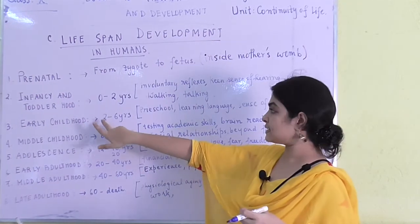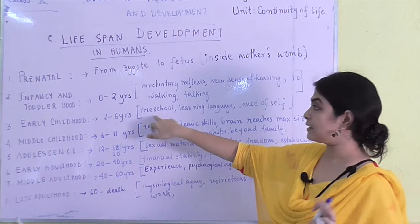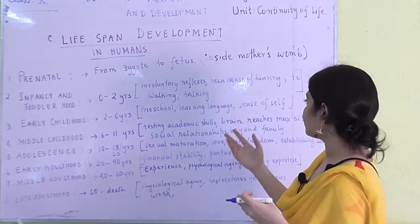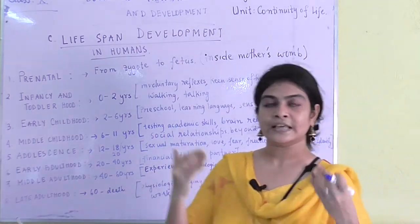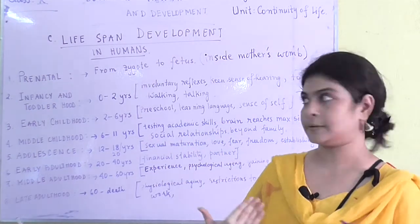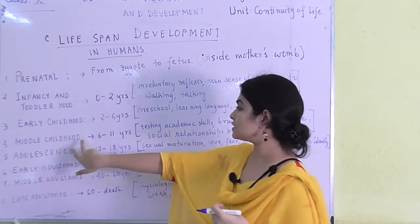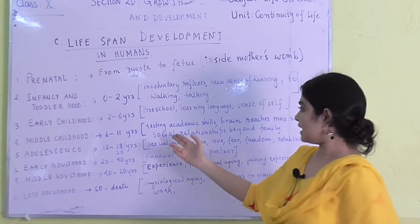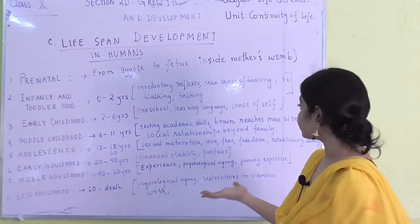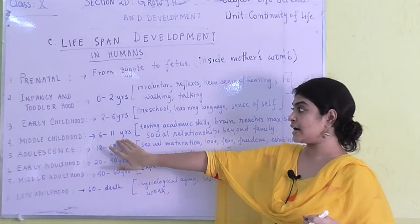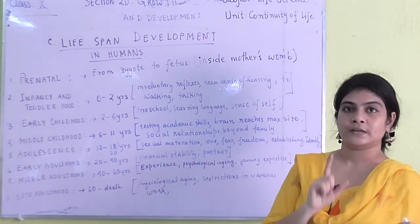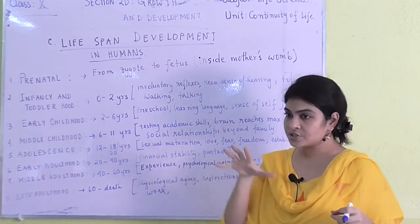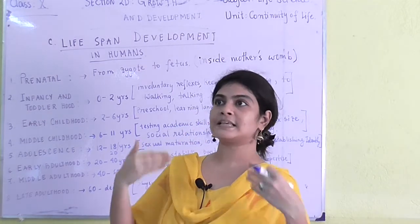Early childhood covers two to six years of age, which includes preschool. By this age the child has been admitted to preschool, is learning language, and developing a sense of self — starting to identify as an individual. Middle childhood covers six to eleven years, up to about class five or six. They are testing academic skills and co-curricular activities. The brain reaches its maximum adult size in this phase, though development continues. Social relationships beyond family also begin.